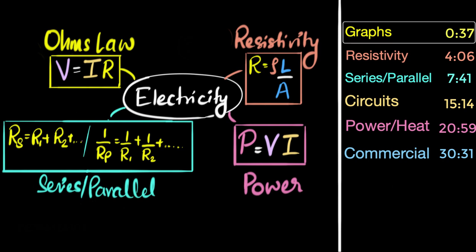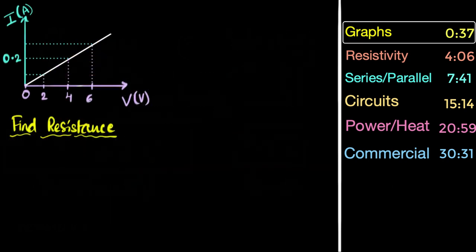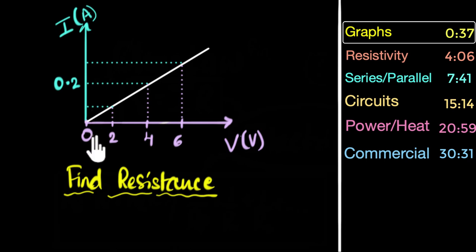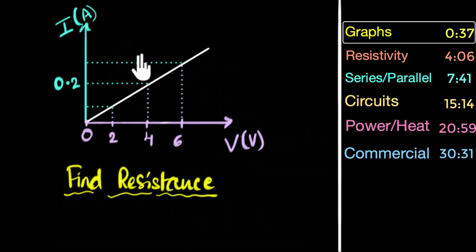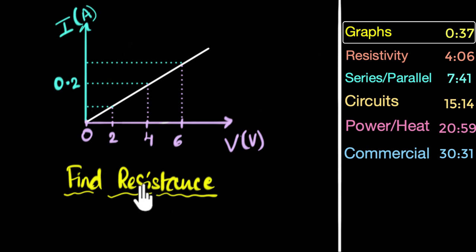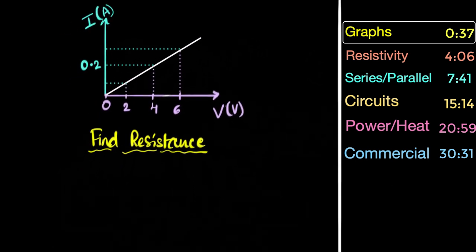Let's start with questions on graphs. Here's a question where we are given a graph of voltage and current, and we are asked to calculate the resistance of this material. We are given values of voltage and current, and from that we are asked to figure out what the resistance is — meaning we need some kind of relation between voltage, current, and resistance. And that relation itself is what we call Ohm's law.